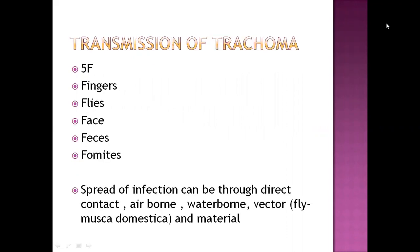Transmission of trachoma can be through many ways. First is the 5F mnemonic: fingers, flies, face, feces, and fomites. Through fingers — direct contact. Flies can be a vector. Through face — anything that comes in touch with the face, like fingers or food. Feces and fomites also spread infection. Other routes include direct contact, airborne, waterborne, vectorborne, and material-borne transmission, meaning both living and non-living things can contribute.